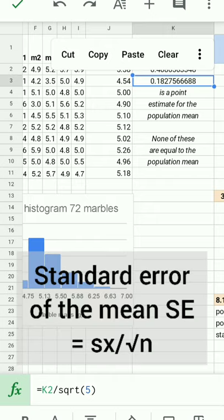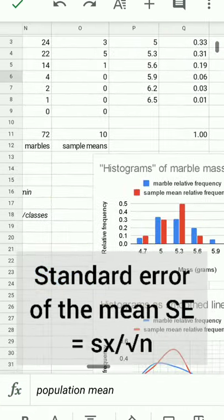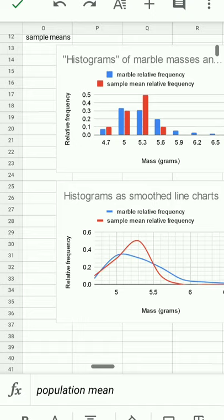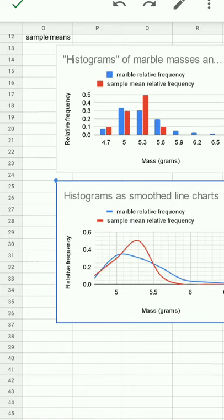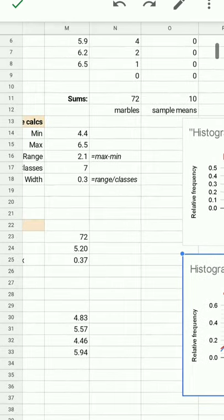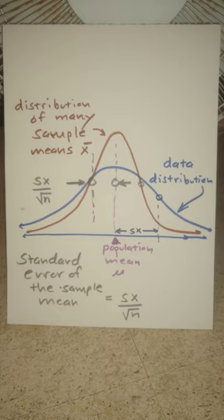It's called the standard error of the mean. It is the estimated distance from the center, the red line, you see there, the center to the inflection point on the normal curve. Here you can see that distance from the center of the distribution of many sample means curve to the inflection point as the standard error of the sample mean.